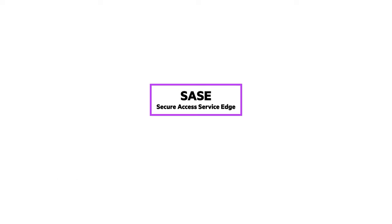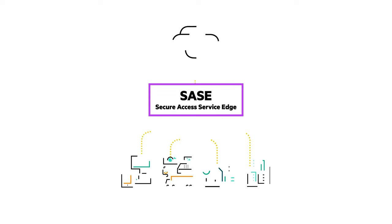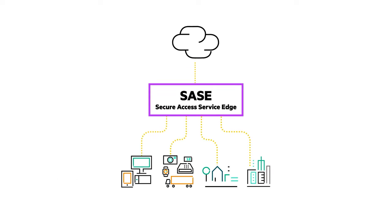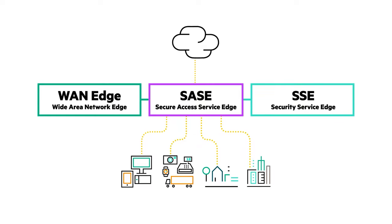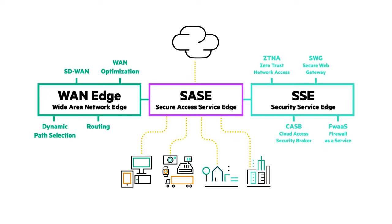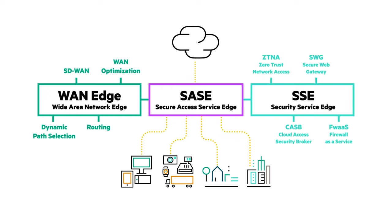Secure Access Service Edge, or SASE, does exactly that. It's a network architecture framework that delivers wide area network and security controls from the cloud directly to edge devices, without going through the data center.